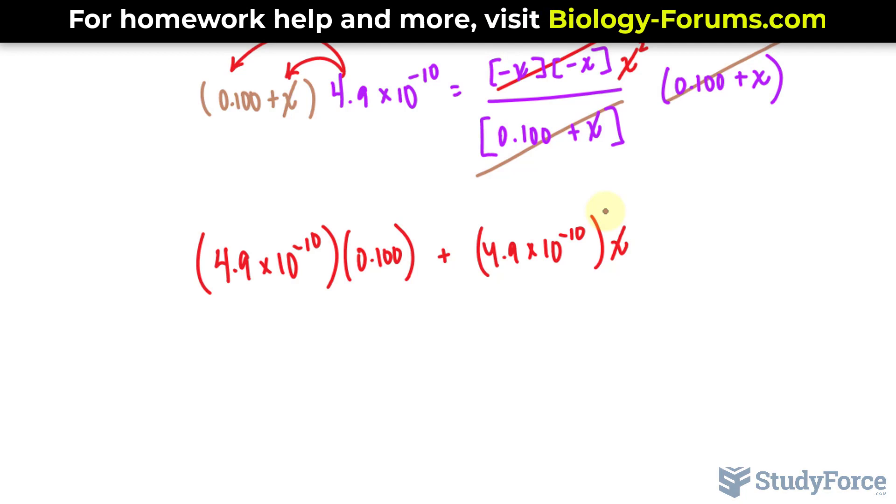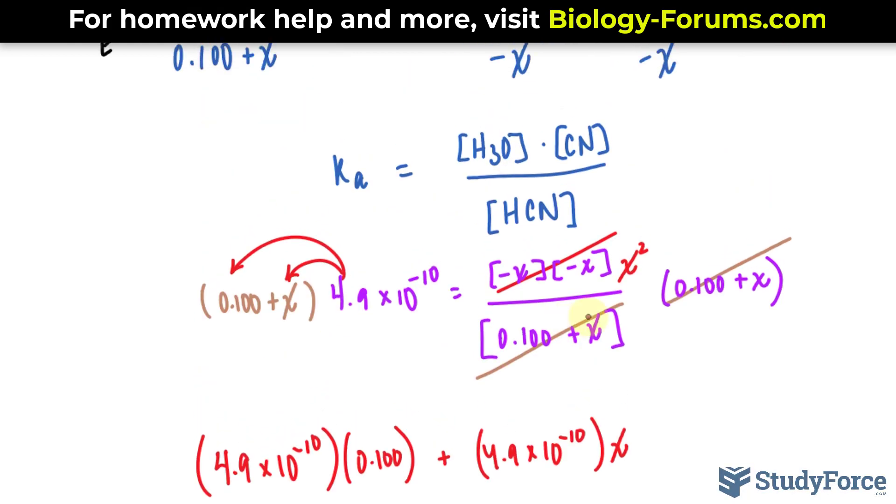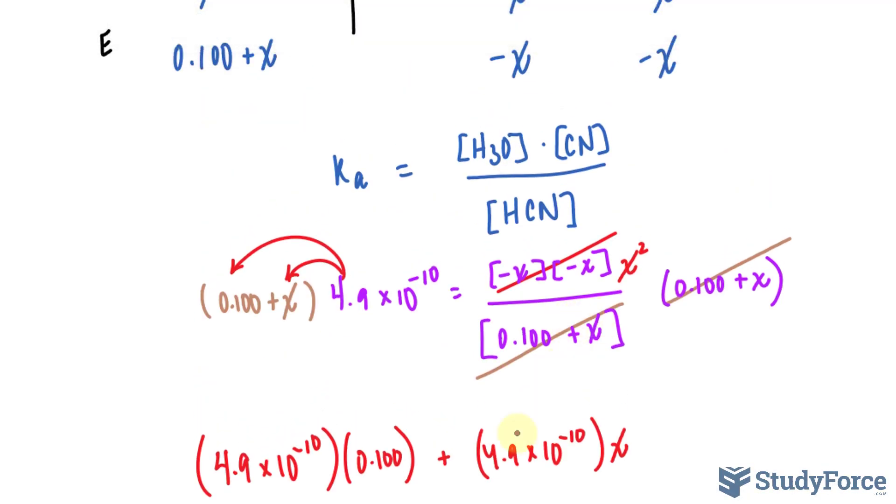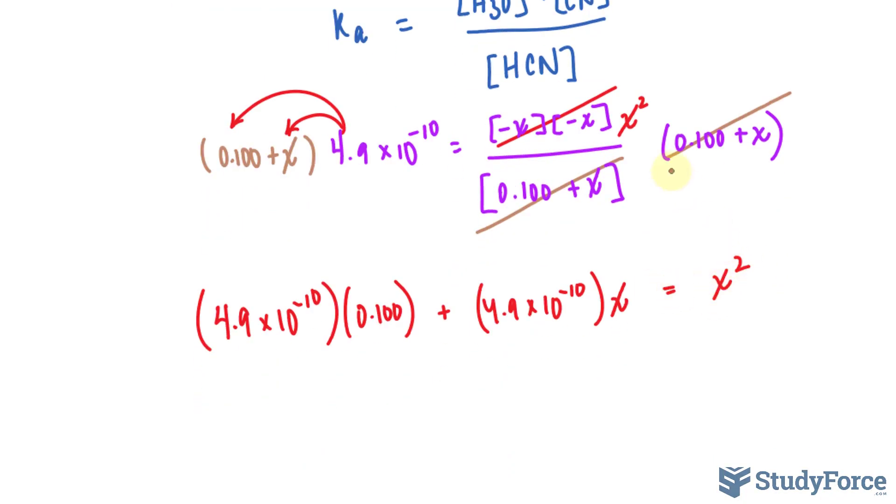Interestingly, given that Ka was so small, 4.9 times 10 to the power of negative 10, you could have also ignored the fact that we even have a plus X written here. So you could have done this even easier without even including this X and the solving process would have been much faster. But this is obviously the most accurate way. And this is equal to X squared.